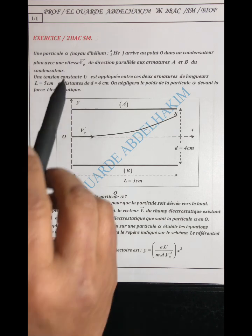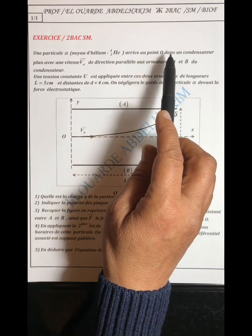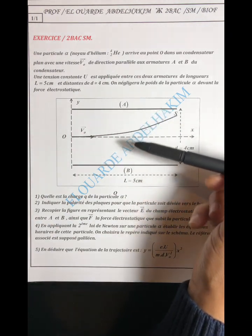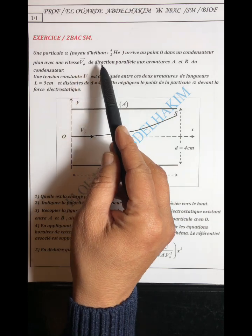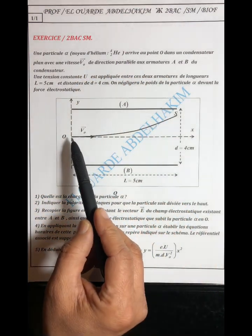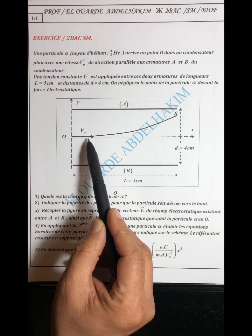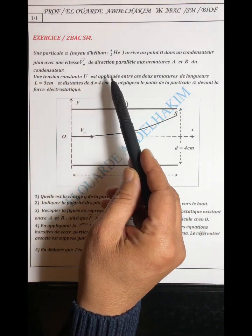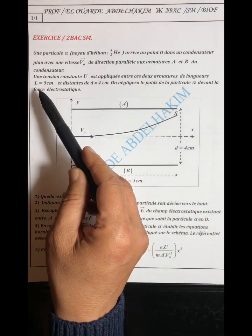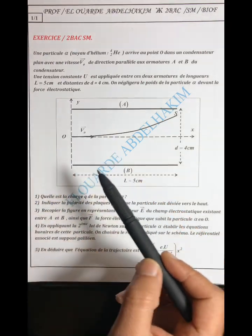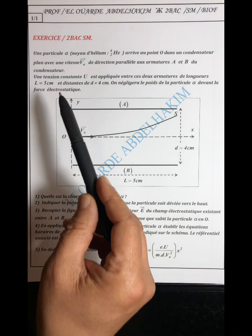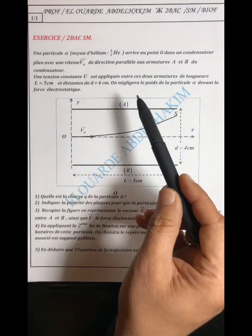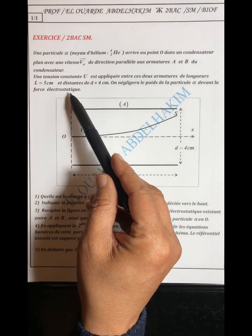Une particule alpha, noyau d'hélium He₂⁴, arrive au point O dans un condensateur plan formé par deux plaques parallèles, la plaque A et la plaque B, avec une vitesse V0 de direction parallèle aux armatures A et B. Une tension constante U est appliquée entre les deux armatures de longueur grand L égale à 5 cm, et la distance d égale à 4 cm. On néglige le poids de la particule alpha devant la force électrostatique.